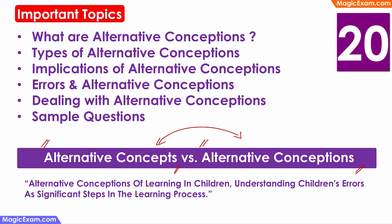This is also clarified in the syllabus, which clearly states alternative conceptions of learning in children and understanding children's errors as a significant step in the learning process. Children's errors are connected to alternative conceptions and not concepts. In this video, we will talk about what alternative conceptions are, their different types, their implications, how errors are connected with them, how to deal with them in the classroom, and we will end with some sample questions from previous question papers.